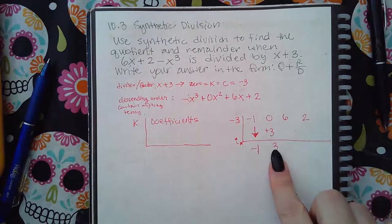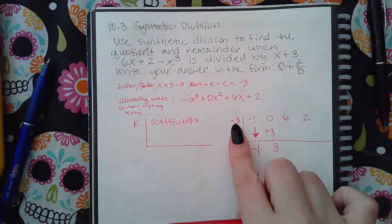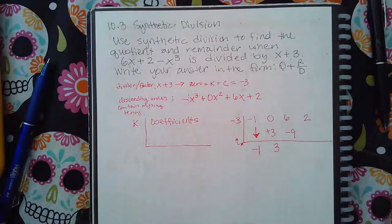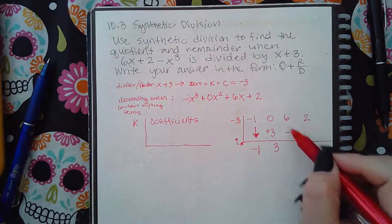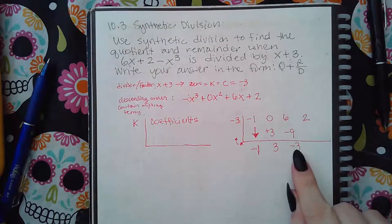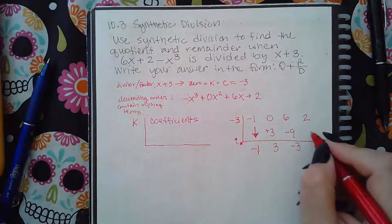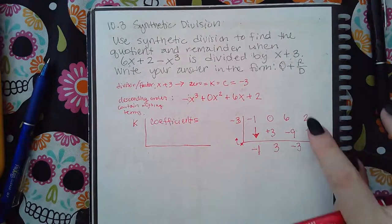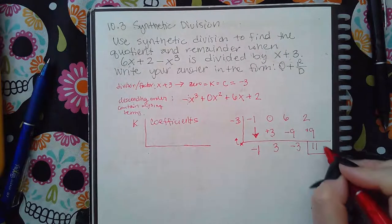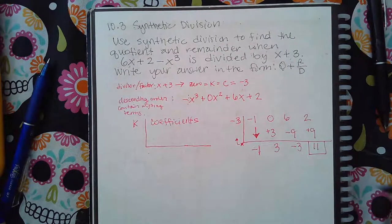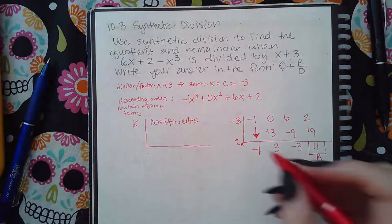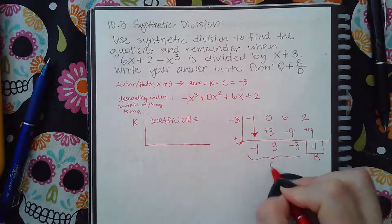Again, anything that comes down here has to get multiplied by that negative 3. And the result goes on top of the line in the next spot. So 6 minus 9 is actually a negative 3. Negative 3 times negative 3 is a positive 9. And 2 plus 9 is an 11. I always box the last number because this is your remainder.